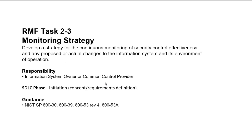Task 3 is monitoring strategy: you develop a strategy for continuous monitoring of security control effectiveness and any proposed or actual changes to the information system and its environment of operation. Just because you've selected security controls doesn't mean you leave it — there must be a strategy to monitor their effectiveness and ensure they're still working as intended. Responsible parties are the Information System Owner or Common Control Provider. The SDLC phase is the initiation phase. NIST guidance includes NIST SP 800-30, NIST SP 800-39, NIST SP 800-53 Revision 4, and NIST SP 800-53A Revision 4.